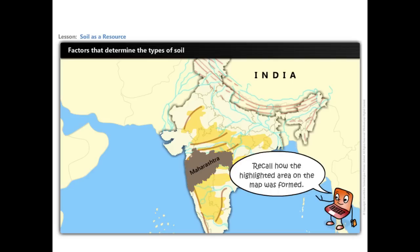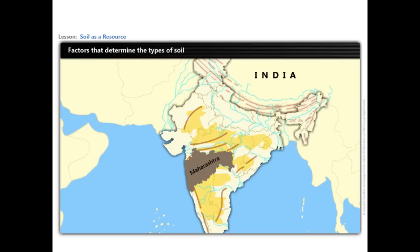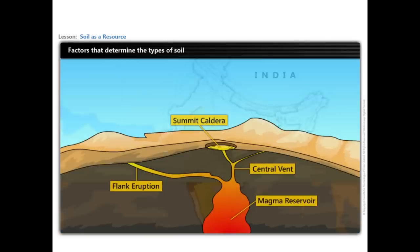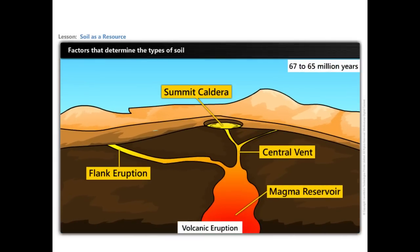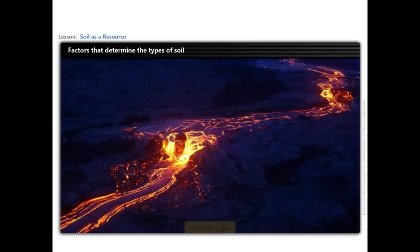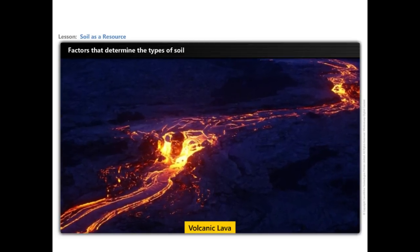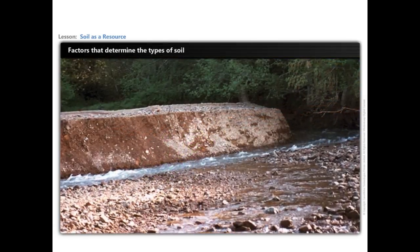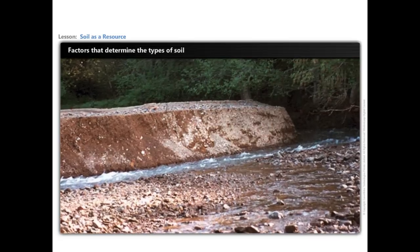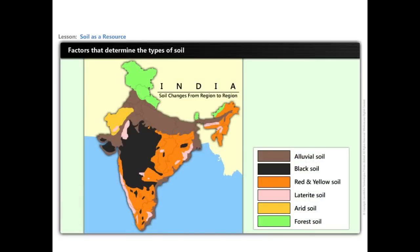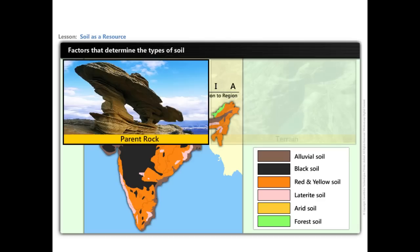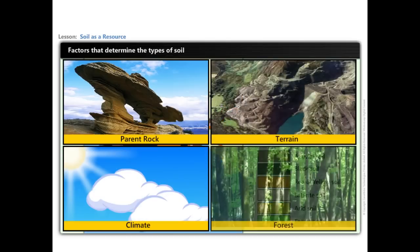Recall how the highlighted area on the map was formed. The highlighted area represents the plateau region, which was formed due to a volcanic eruption that took place 67 to 65 million years ago. Thus, the soil present here is made up of volcanic lava. On the other hand, soil in the northern plains of the country is formed with sediment carried by rivers. Hence, types of soil found in different areas depend on various factors such as parent rock, terrain, climate, forest cover, etc.